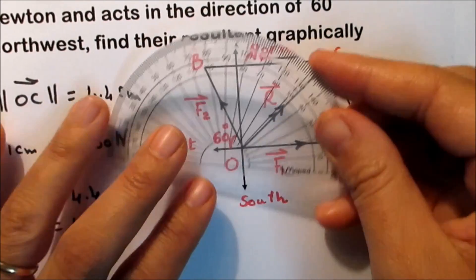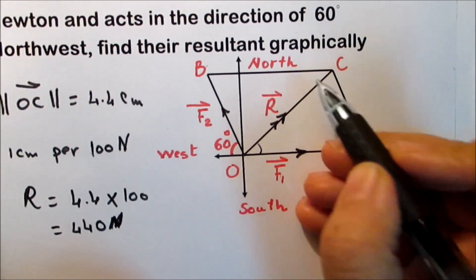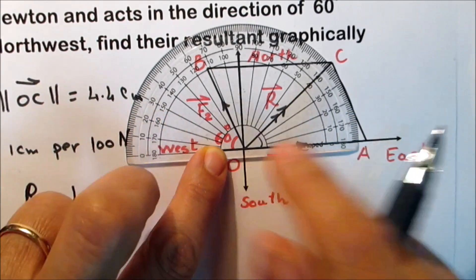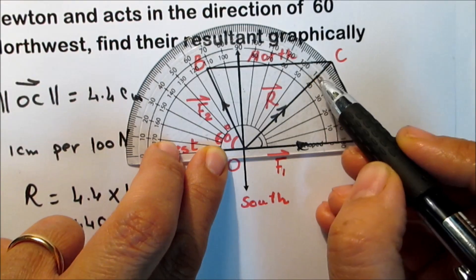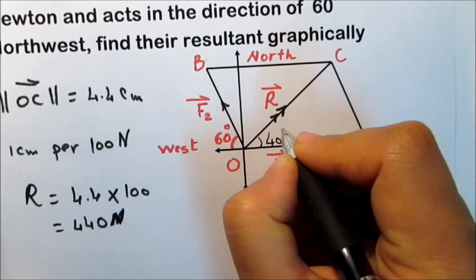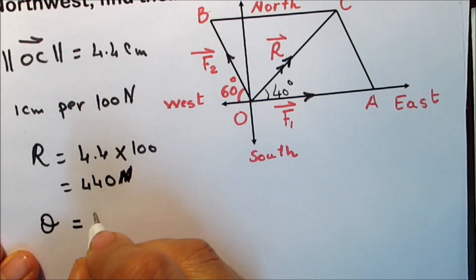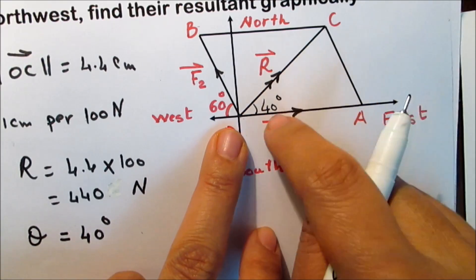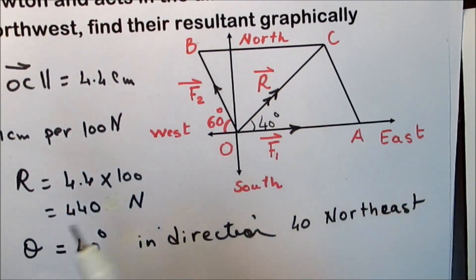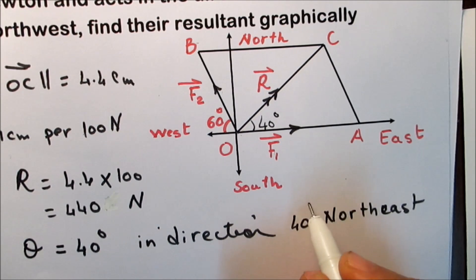Use the protractor to find the direction of the resultant. Find the angle between the resultant R and the force F1 by placing the center of the protractor at the origin point. The angle is about 40 degrees. So the resultant goes 40 degrees above the east direction. Finally, by graphing, the resultant is 440 newtons in the direction 40 degrees northeast.